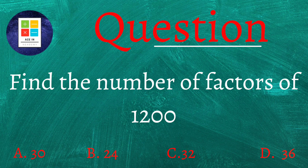The question is: Find the number of factors of 1200. We are provided four options — Option A: 30, Option B: 24, Option C: 32, and Option D: 36.